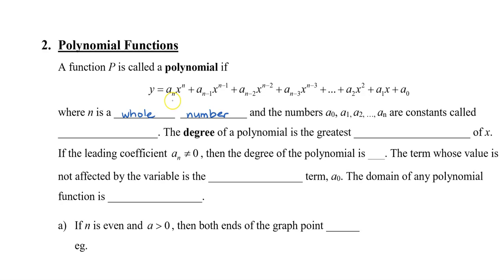The numbers, we'll call them the coefficients a₀, a₁, a₂, and so on. These are called coefficients. The degree of a polynomial is the greatest exponent of x, so whichever one is the highest of the variable is the degree. If the leading coefficient aₙ doesn't equal 0, then the degree of the polynomial is going to be whatever that first term's x exponent is. The term whose value is not affected by the variable is the constant term. So if you look at the last term, a₀ here, it doesn't have any x, so that's called the constant term. The domain of any polynomial function is always going to be all real numbers.